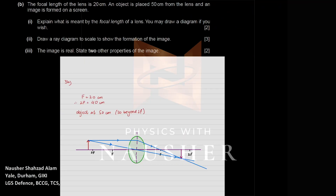For the scale drawing, set a scale of 5 cm actual equals 1 cm on the drawing. So 20 cm actual becomes 4 cm on the drawing — 20 cm is too large to fit on paper. The focal length will be represented by 4 cm. Draw a straight line, measure 4 cm on either side to mark the focal point F, then measure 4 cm again to mark 2F on both sides.